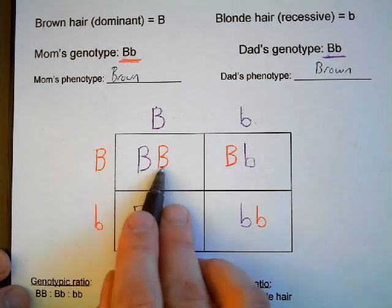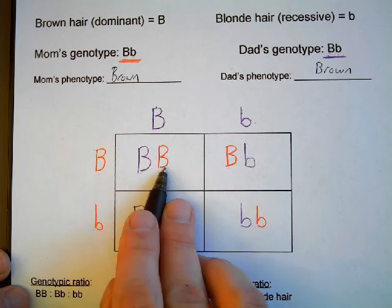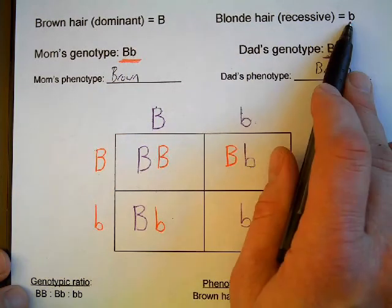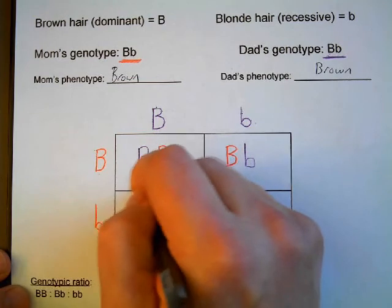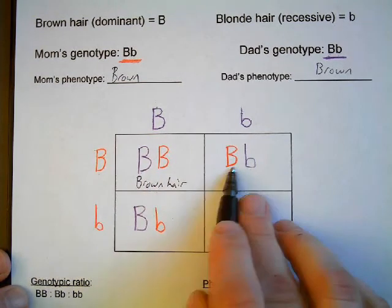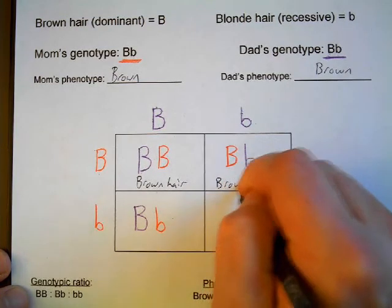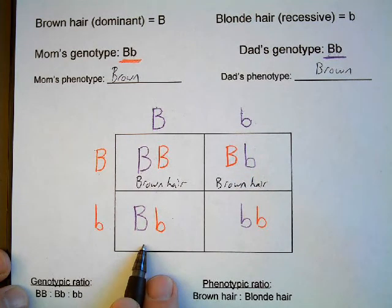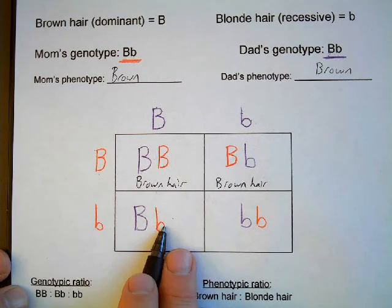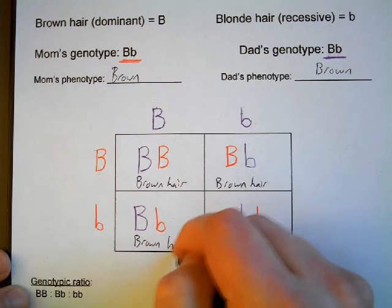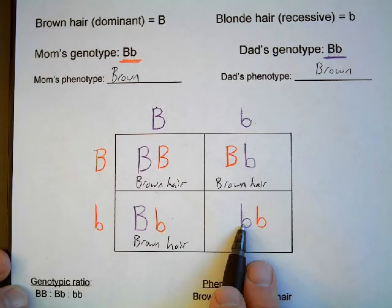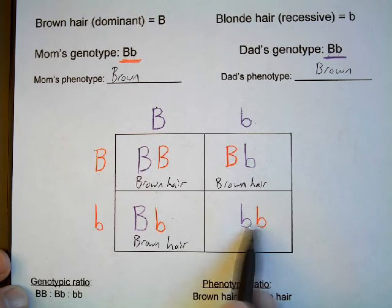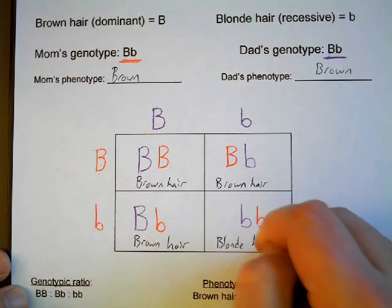What I always like to do is write in the phenotype that results from the genotype. Remember: a genotype is a pair of alleles that code for a physical trait. Brown hair is dominant (capital letter) and blonde hair is recessive (lowercase letter). If we have two capital B's, this offspring would have brown hair. This offspring would also have brown hair because the brown hair gene is dominant and covers up the blonde hair gene. This offspring would have brown hair from its genotype. And this box — capital B, lowercase b — the capital B covers up the recessive gene for blonde hair, so this person would also have brown hair. Lastly, we have two recessive genes — homozygous recessive — both code for blonde hair, and because there's no capital B, this person would have blonde hair.